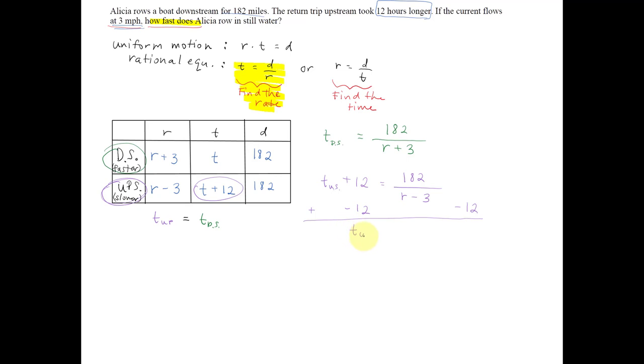And get t going upstream equal to 182 over r minus 3 minus 12. Alright, setting these two equal to each other now, we get 182 divided by r minus 3 minus 12 equal to the time it took going downstream, which is 182 over r plus 3. And now we can go ahead and take this equation and solve.